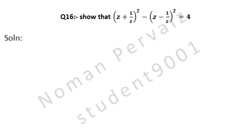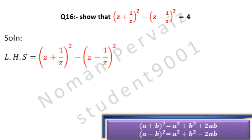Now let's see its solution. We are taking its left-hand side, and the left-hand side is (z + 1/z) whole square minus (z - 1/z) whole square.